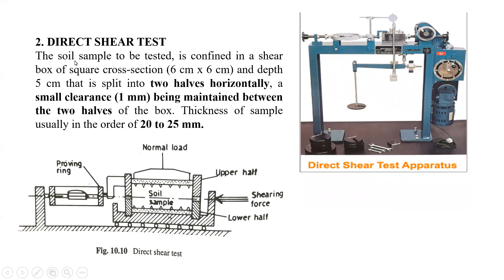The soil sample to be tested is confined in a shear box of square cross section. The dimension of the shear box is 6 cm by 6 cm and the depth is 5 cm. It has been split horizontally into two halves — the upper half and the lower half — with a small clearance of one millimeter maintained between the two halves of the box.